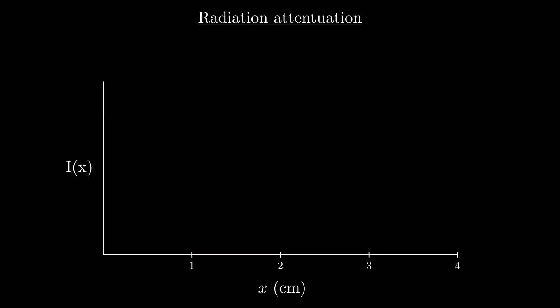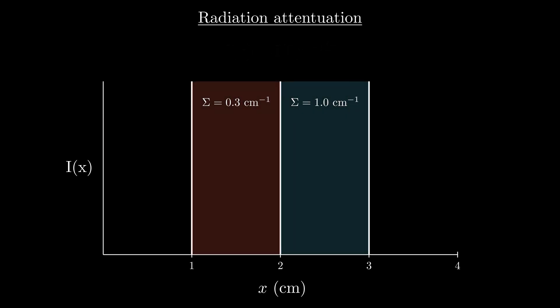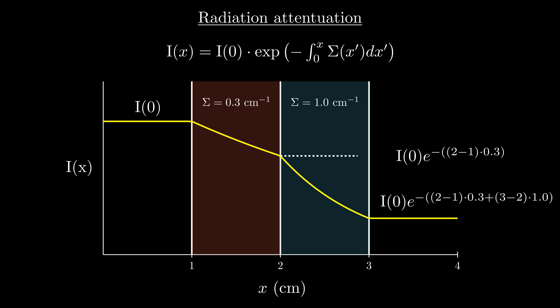For something a little more complicated, let's take a look at a two-part slab, where the first section from x equals 1 to x equals 2 has a macroscopic cross section of 0.3 inverse centimeters, and the second section from x equals 2 to x equals 3 has a macroscopic cross section of 1 inverse centimeters. In the first section, the beam attenuates away slowly, since the probability of interaction per length is lower, and then once we hit the second section, we attenuate away more quickly. I'm sure you can see now how this concept would be useful if we were trying to design a radiation shield. Depending on how much we wanted to attenuate a beam away, and how thick we wanted our shield to be, we could pick materials with suitable macroscopic cross sections to accomplish our goal.